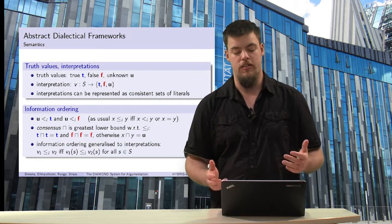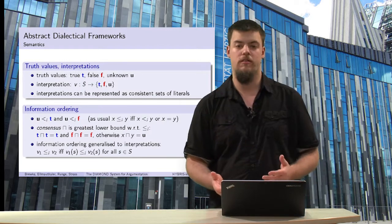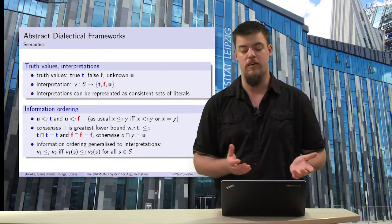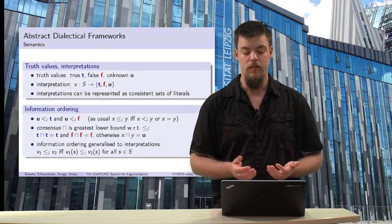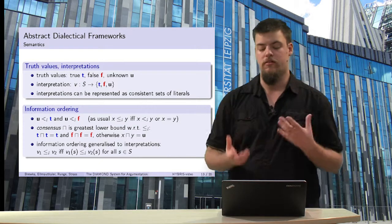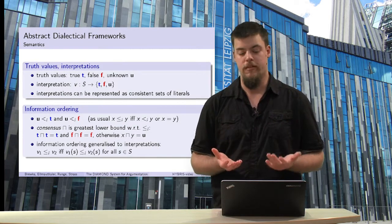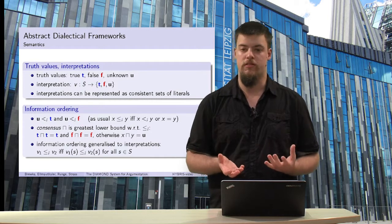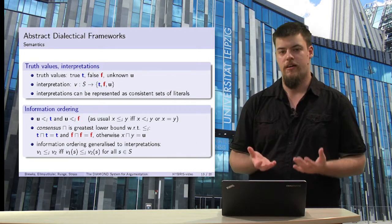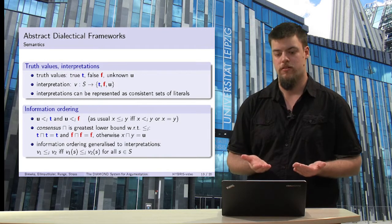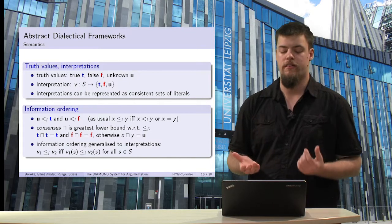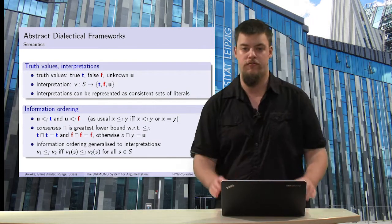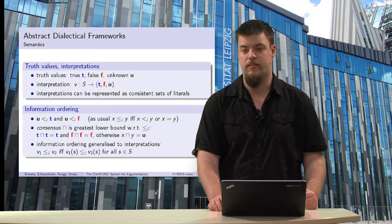If we have two truth values, we can build the greatest lower bound with respect to the information ordering, which we call the consensus — meaning is there a consensus between those two truth values. This results in the consensus operator: true and true together is true, false and false together is false, and otherwise it is undecided or unknown.